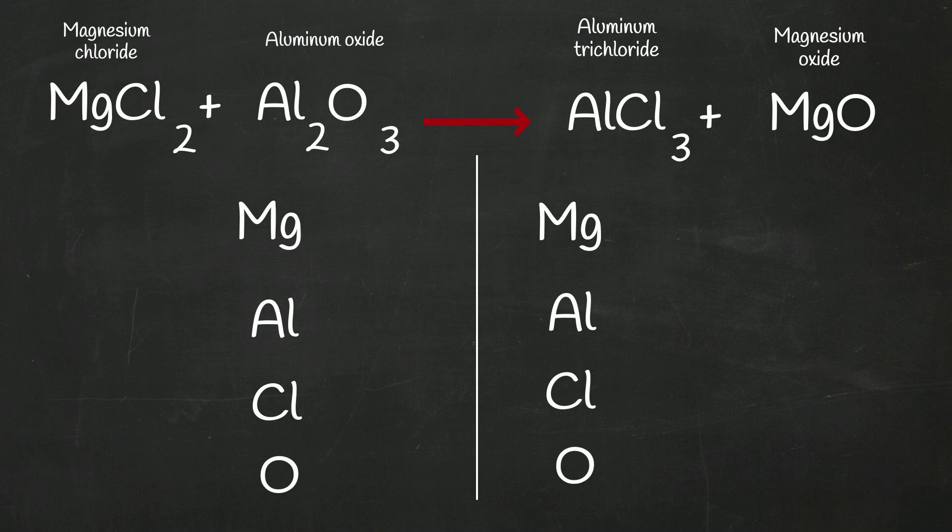Now let's start counting atoms. Okay, magnesium, there's not a subscript, so we have one of those. So we have one magnesium on the left, and I'm going to go on the left this time. We have two aluminums because of the subscript. We have two chlorines and then three oxygens.